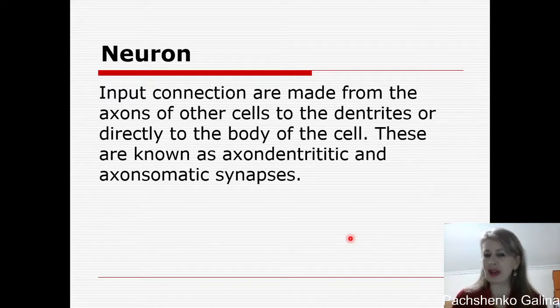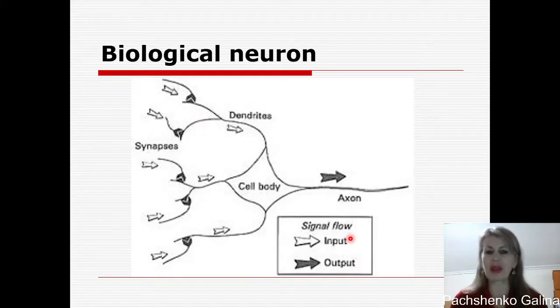These are known as axodendritic and axosomatic synapses. Here you can see biological neurons with a cell body and dendrites and synapses like an input signal flow and here axon like the output flow.